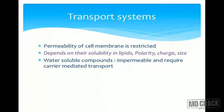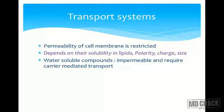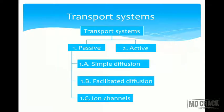Why do we need transport across the cell membrane? Mainly because it is a lipid bilayer, and some things which have to cross it may not be able to do so — for example, water-soluble substances cannot cross a lipid barrier. So we need a transport system. What determines which substances can cross the membrane depends upon their polarity, charge, size, and solubility in lipids.